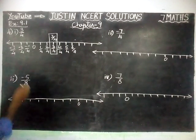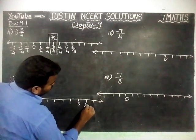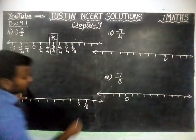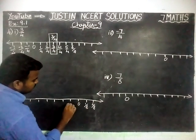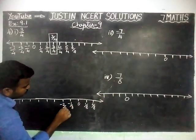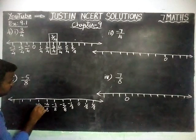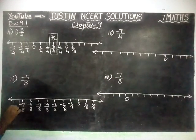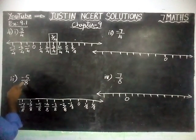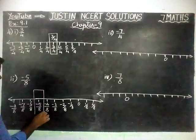Second one: minus 5 by 8. This will come on the left hand side because this is a negative number. Here the denominator is 8, so we will start from 8 only. On the left: minus 1 by 8, minus 2 by 8, minus 3 by 8, minus 4 by 8, minus 5 by 8, minus 6 by 8, minus 7 by 8, minus 8 by 8, which equals minus 1. So in between 0 and minus 1, we have to find minus 5 by 8. Counting: minus 1, minus 2, minus 3, minus 4, minus 5 — so this is minus 5 by 8.